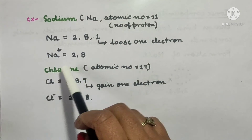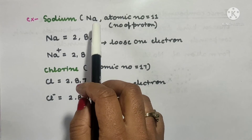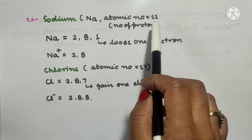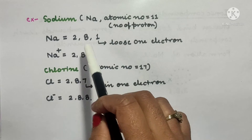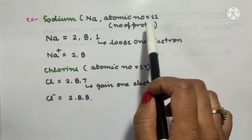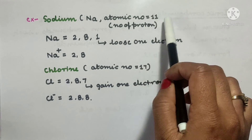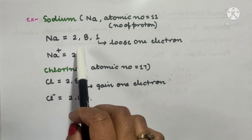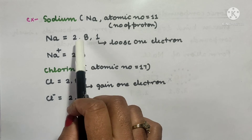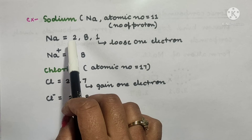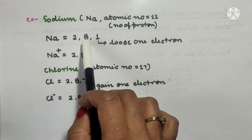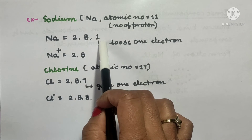We can explain this with an example. Let's take sodium, whose atomic number is 11. The electronic configuration of sodium is 2, 8, 1 — meaning 2 electrons in the K-shell, 8 in the L-shell, and 1 in the outermost shell.